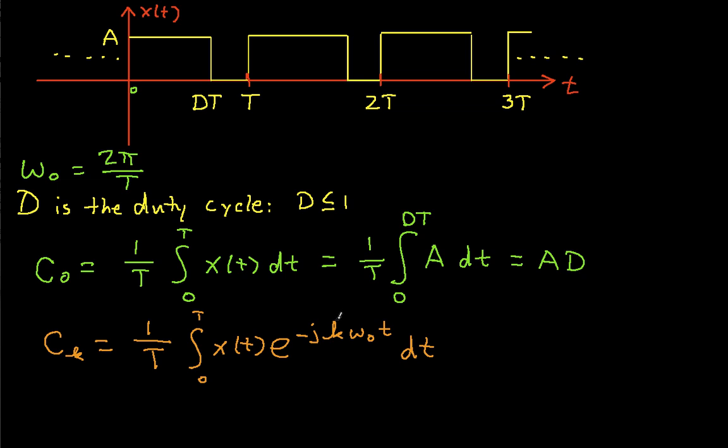Hopefully this makes sense. This is just the formula for C sub k when k is not equal to 0. And now we have 1 over T. X(T) is A when T is between 0 and DT, and 0 otherwise. So I can write this as the integral from 0 to DT of A, e to the minus j k omega 0 T dT.